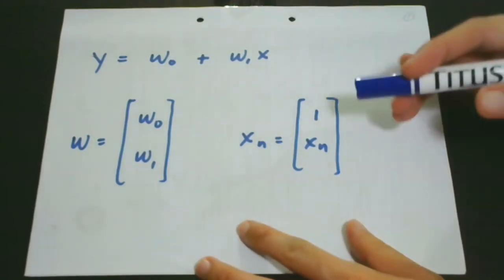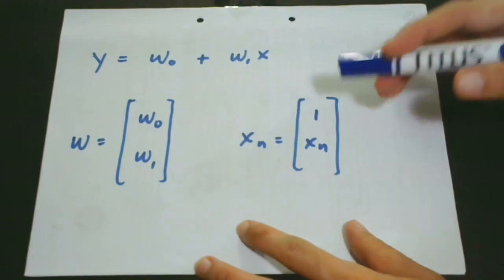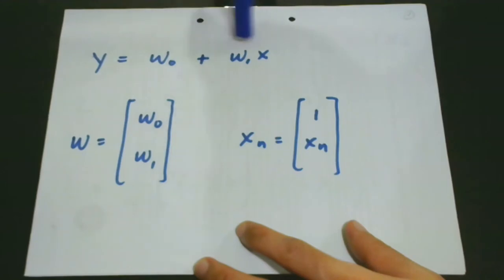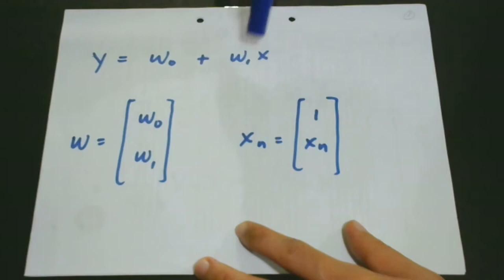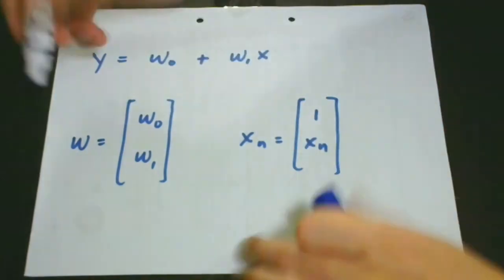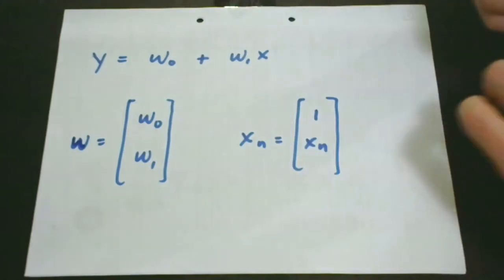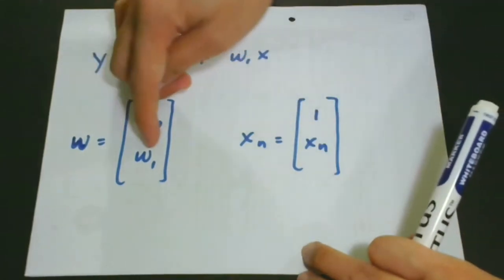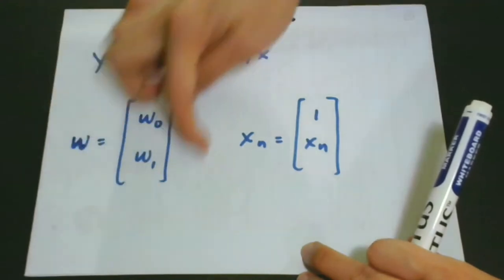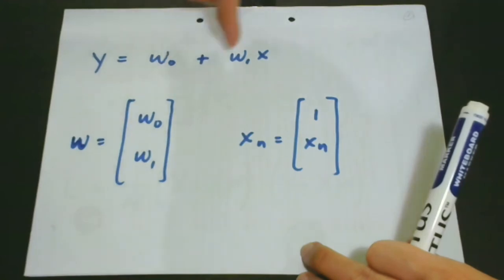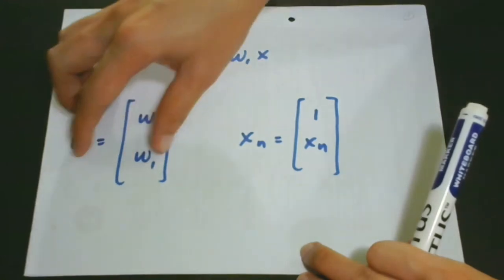To realize this, what we will do is combine w0 and w1 into a single parameter vector, which is w. So we have w is equal to w0 and w1. This is the combination vector of w0 and w1, and this is our first step.